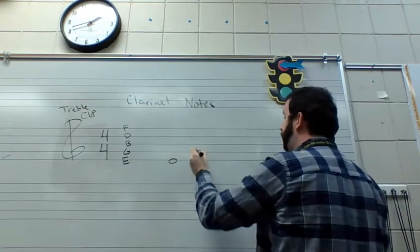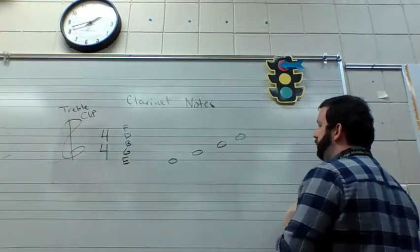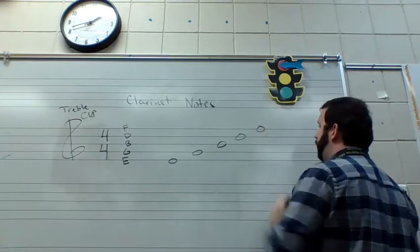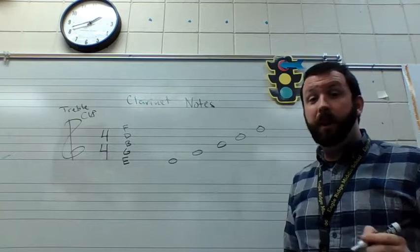The second line is G for good. The third line is B for burgers. Fourth line is D for deserves. And the fifth line is F for fries.